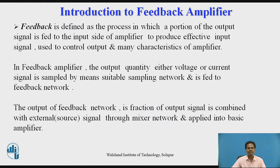In a feedback amplifier, the output quantity — either a voltage signal or a current signal — is sampled by means of a suitable sampling network, and it is fed back to the input side of the amplifier using a feedback network. The output of the feedback network, which is a fraction of the output signal proportional to the sampled signal, is combined with the externally applied signal source signal through a mixer network and applied into the basic amplifier. After mixing, the effective input signal is applied to the basic amplifier.